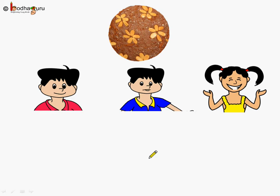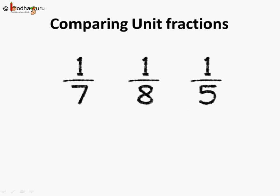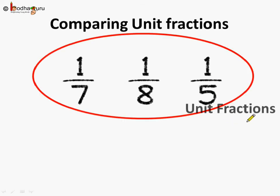Now, coming to the next problem. This is a cake and Anand, Rajat, and Khushi wanted to share it. Anand took 1 by 7th part, Rajat took 1 by 8th part, and Khushi took 1 by 5th part. So, how do we compare these fractions? They all have 1 as the numerator — 1 by 7th, 1 by 8th, 1 by 5th. So, they are called unit fractions. Any fraction which has 1 as the numerator is called a unit fraction.